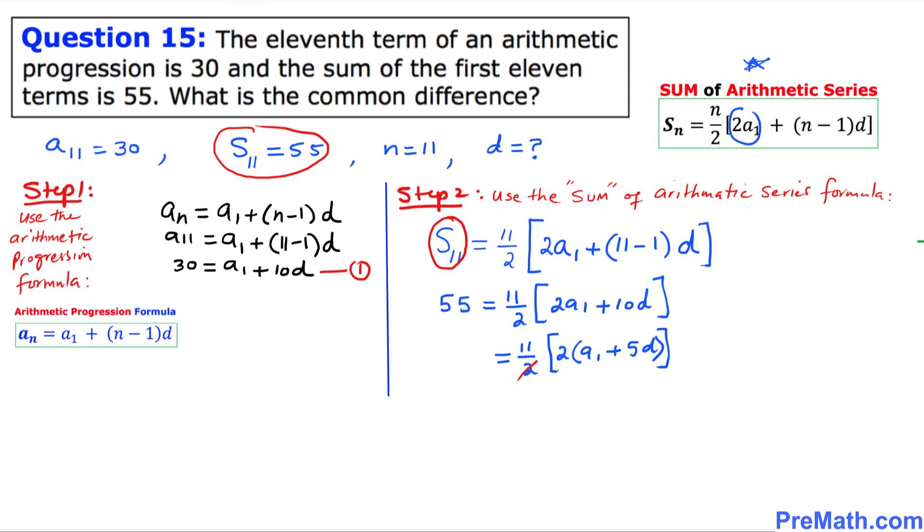So we simply got 55 equals 11 times A1 plus 5D. Let me just divide both sides by 11.